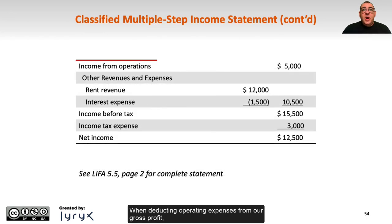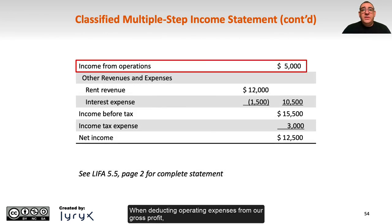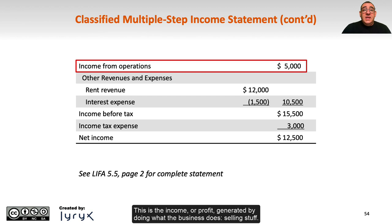When deducting operating expenses from our gross profit, we end up with income from operations of $5,000. This is the income or profit generated by doing what the business does — selling.